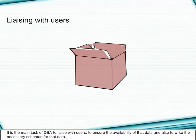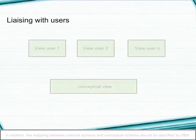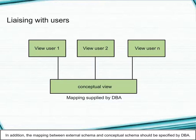Liaising with users: It is the main task of the DBA to liaise with users to ensure the availability of that data and also to write the necessary schemas for that data. In addition, the mapping between the external schema and conceptual schema should be specified by the DBA.